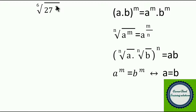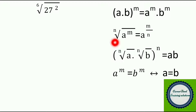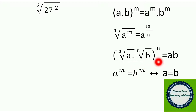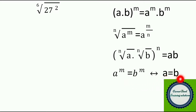Before we start solving this problem, on the right hand side I have included 4 important rules of surds. You can write (a into b) to the whole power m as a^m into b^m. The n-th root of a^m can be written as a^(m/n). The n-th root of a into n-th root of b, to the whole power n, can be written as a into b. And a^m = b^m is equivalent to a = b.